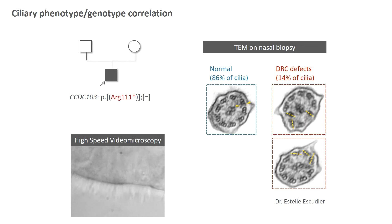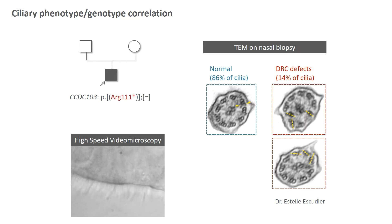Dr. Estelle Escudier noticed that in a small proportion of cilia there was a slight disorganization, and that the axis of the outer doublet was slightly tilted towards the center. This was for her evocative of a defect in the nexin-dynein regulatory complex, which links the outer doublets together.